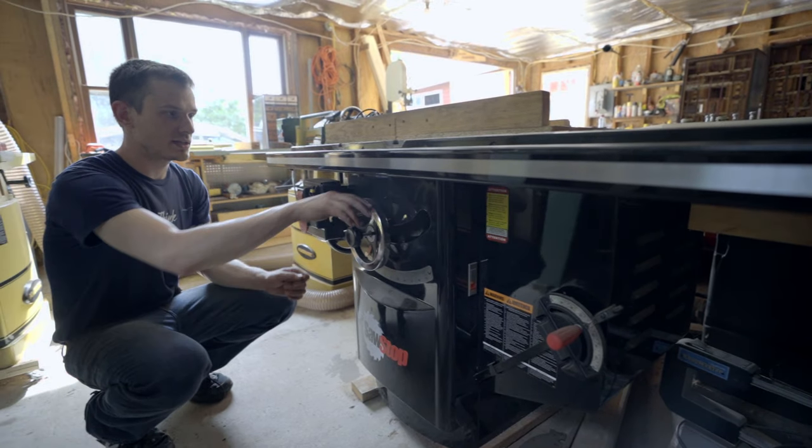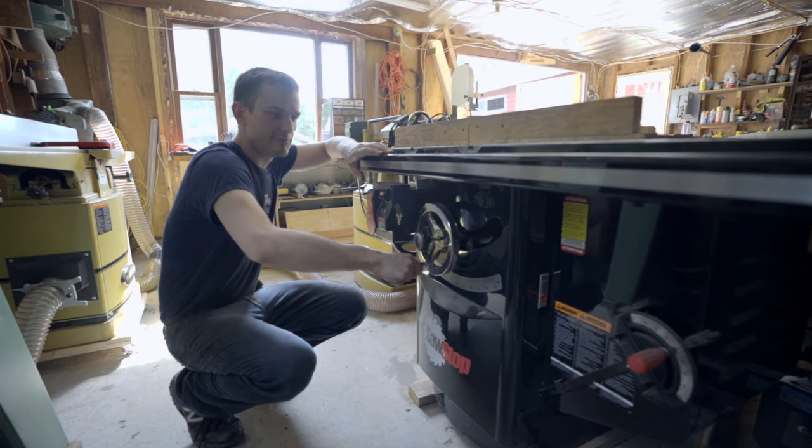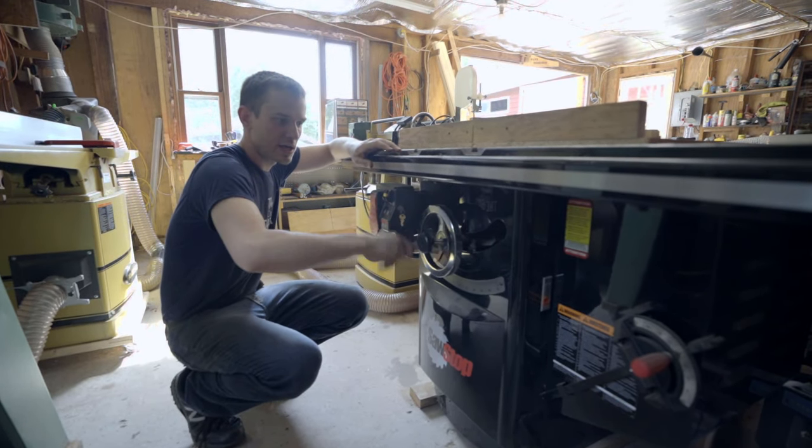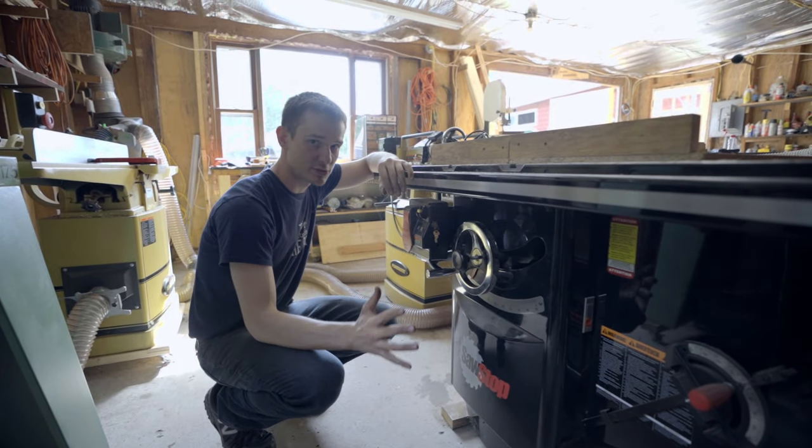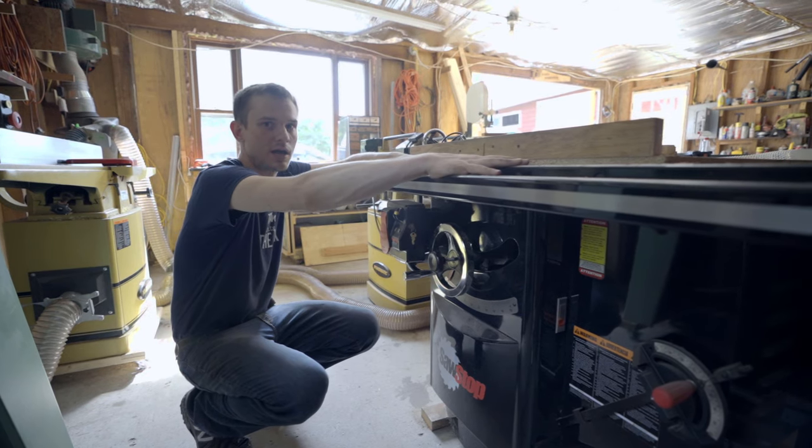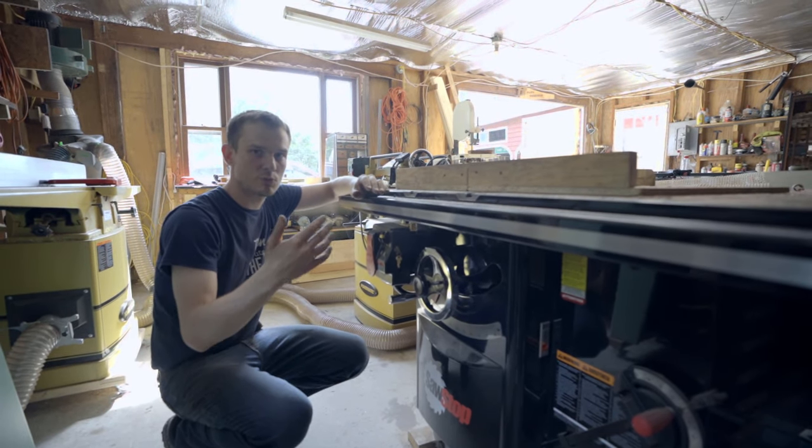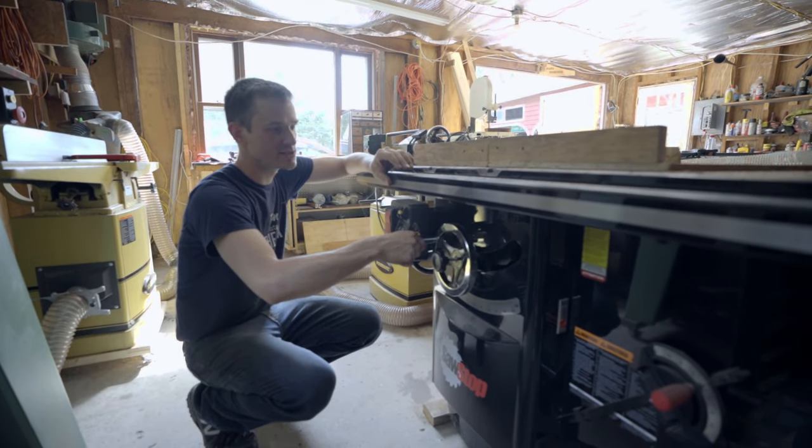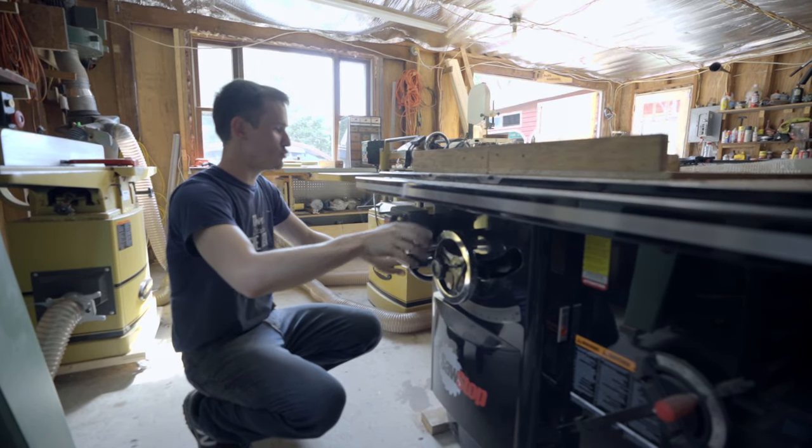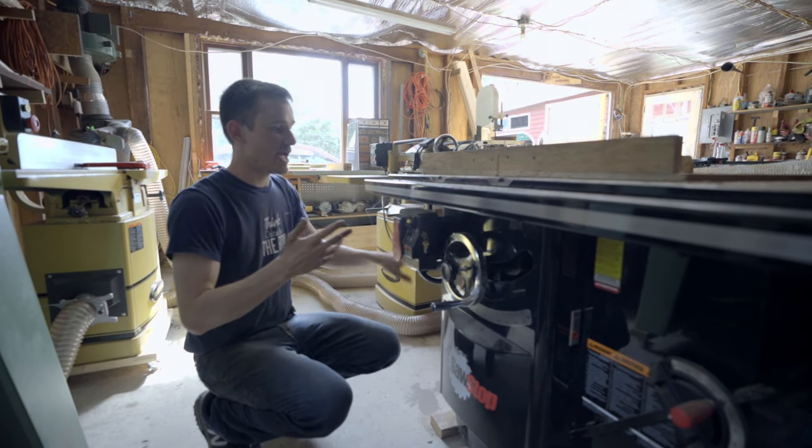I really like this saw - this is the Saw Stop. I like it because it's super smooth action and it's got these big cast iron hand wheels that are really smooth. The action's smooth, the bearings are super smooth. When you turn the saw on there's no vibrations which would transmit into your wood and compromise the finish.